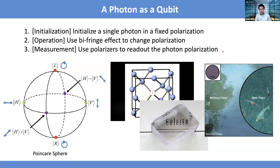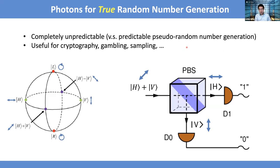An immediate application is quantum random number generation. Photons with different polarizations can naturally be used for quantum random number generators. We know random number generation is important in computer science and security. If you prepare a photon in 45-degree polarization — a superposition of horizontal and vertical — and let it go through a polarizing beam splitter where the horizontal photon passes through and the vertical photon is reflected, you put detectors at each output. If detector D1 clicks, you say it's one; if D0 clicks, you get zero. With a 45-degree polarization photon coming in, nobody knows which detector will click until you detect the signal — it is completely random and nobody can predict it.